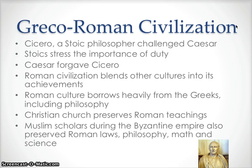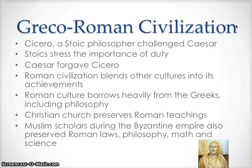Cicero is a Stoic philosopher who challenges the emperor. The Stoics believe that a sense of duty to other people is more important than loyalty to the state. Caesar actually forgave Cicero for saying things against him, and he credited Cicero saying, 'It is more glorious to enlarge the mind than to enlarge the boundaries of Roman rule.' Rome took a lot of cultures and blended them — they took Greek, Hellenistic, and Roman achievements, mixed them all together, and said, 'This is us, this is our culture.'